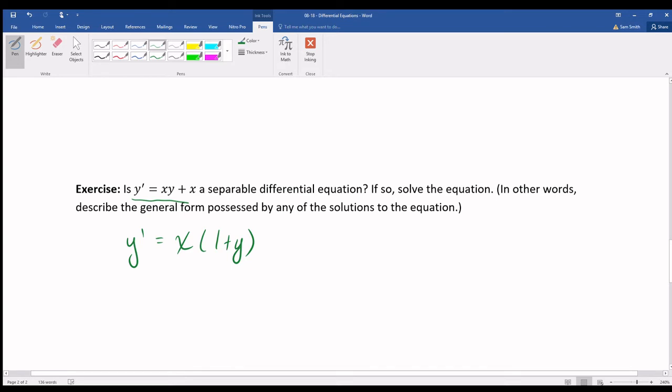And since I factored out an x, I'm able to now divide both sides of this equation by the quantity 1 plus y. So, look what we have obtained. On the left-hand side, we have a function only in the variable y. No x's on the left-hand side. That is being multiplied by y prime.